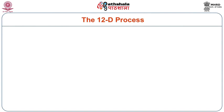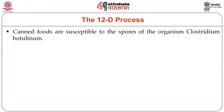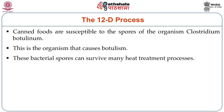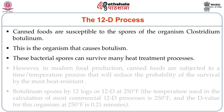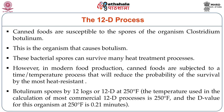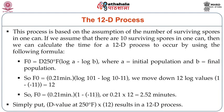Let us now try to understand the 12-D process. Canned foods are generally susceptible to spores of organisms like Clostridium botulinum, which causes botulism and is very hazardous. These bacterial spores can survive many heat treatment processes. In modern food production, canned foods are always subjected to a time-temperature process that will reduce the probability of survival of Clostridium botulinum by 12 logs or 12-D at 250°F. This process is based on the assumption of the number of surviving spores in one can, and the time for a 12-D process can be calculated using the formula shown in the slide.